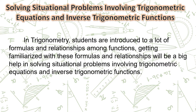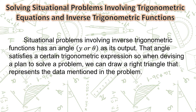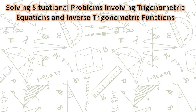In trigonometry, students are introduced to a lot of formulas and relationships among functions. Getting familiarized with these formulas and relationships will be a big help in solving situational problems involving trigonometric equations and inverse trigonometric functions. Situational problems involving inverse trigonometric functions produce an angle as output — that angle satisfies a certain trigonometric expression. We can draw a right triangle that represents the data mentioned in the problem. In solving problems involving solutions of right triangles, we use the concepts of angle of elevation and angle of depression, which apply when a person observes an object either above or below the horizontal.